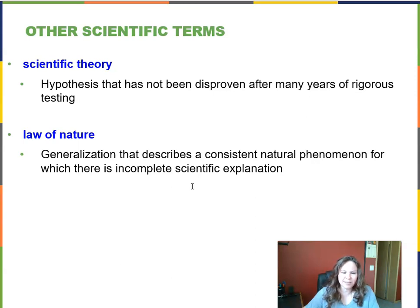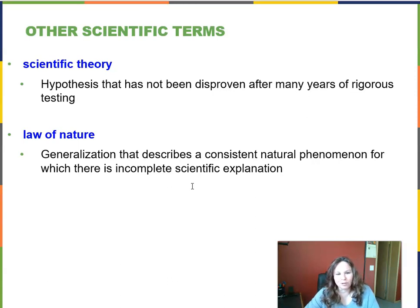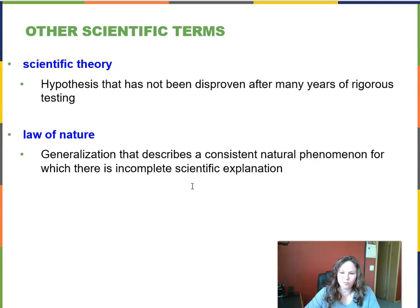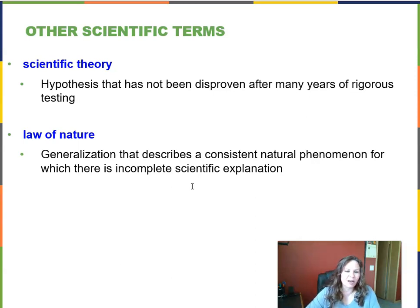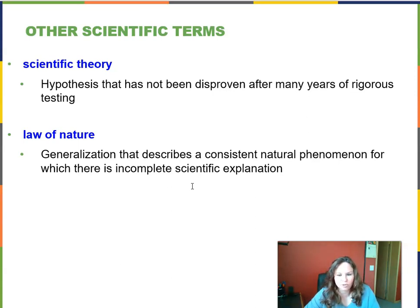A scientific theory consists of hypotheses that have not been disproven after many years of rigorous testing and can explain phenomena in the world. Theories may be added to as new discoveries are made — usually not enough to change the whole theory, but refined over time. A scientific law is a generalization describing a consistent natural phenomenon for which there is still an incomplete scientific explanation. Examples include Newton's three laws of motion, Kepler's laws of planetary motion, and gravity.